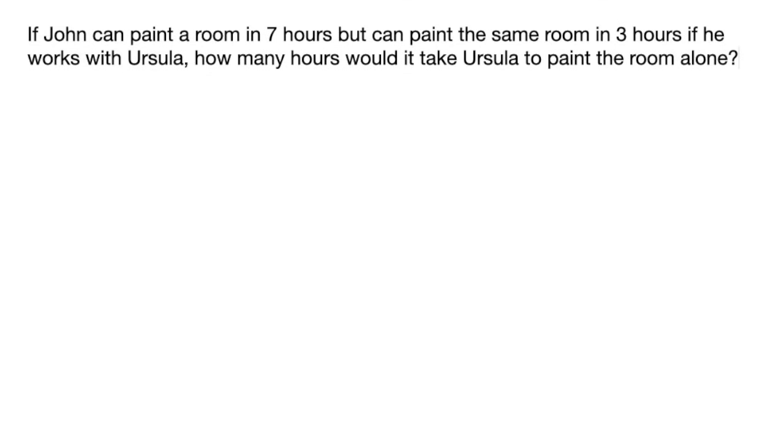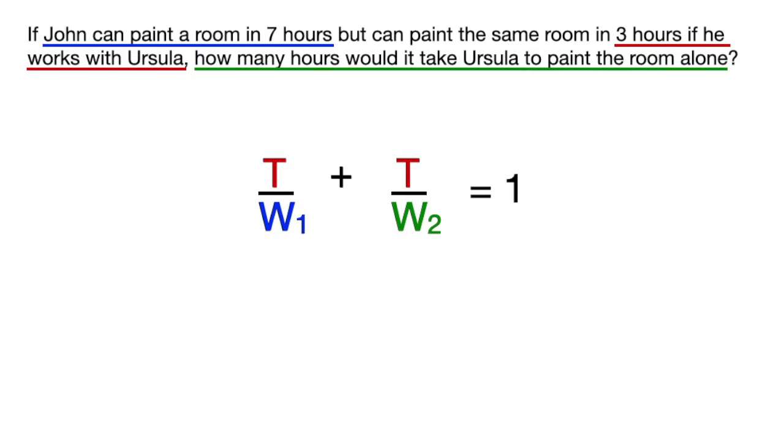Well, in this problem, they told us the amount of time that it takes for them to work together, and now they're asking for the amount of time it takes for one person to paint the room alone. We're going to use the same formula as before, but in this case, t is the amount of time they spent painting the room together, which is already given. W1 is the amount of time it takes for John to paint the room, and w2 is what we will be solving for, the amount of time it takes Ursula to paint the room alone.